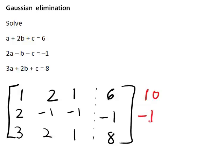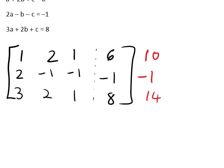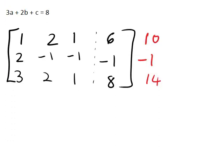For the third row, three plus two plus one plus eight gives a row sum of fourteen. We then need to perform row operations on this tableau so that all elements below the diagonal extending from the top left corner are zero — specifically the elements in the second and third row of column one, and in the third row of column two.